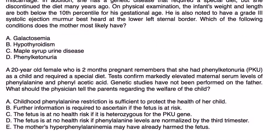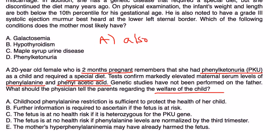Clinical vignette 2: A 20-year-old female who is two months pregnant recalls having PKU as a child and having required a special diet. Tests confirm markedly elevated maternal serum levels of phenylalanine and phenylacetic acid. What should the physician tell the parents? Choice A — childhood phenylalanine restriction is sufficient to protect the child's health — is incomplete because you also need to protect the fetus during pregnancy by restricting maternal phenylalanine. Choice B — further information is required to determine if the fetus is at risk — is incorrect, because the fetus is definitely at risk given the mother has PKU.